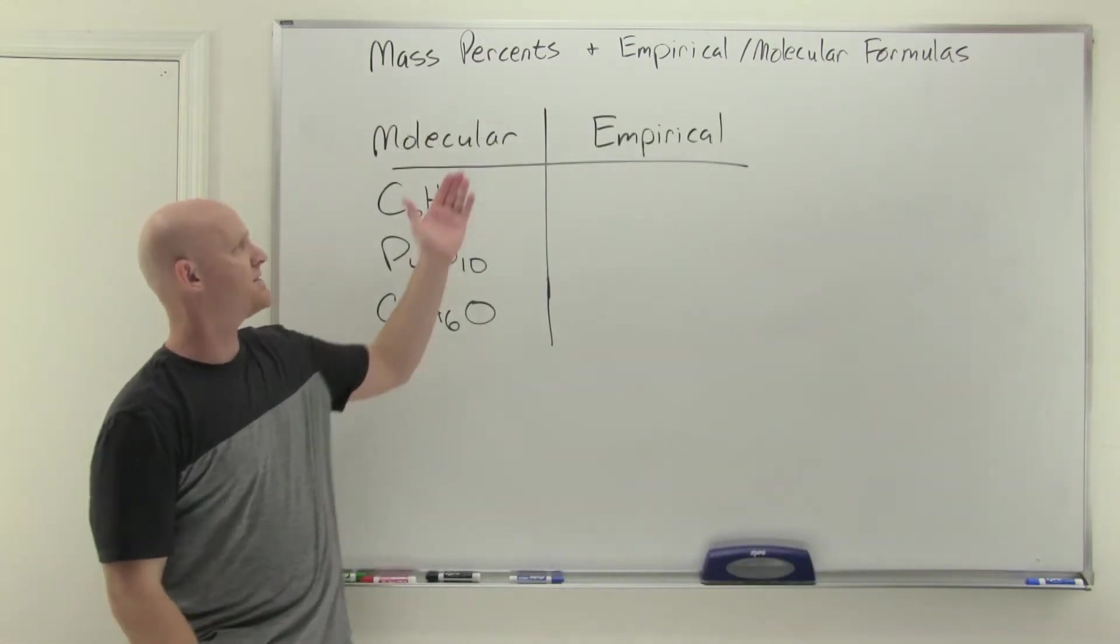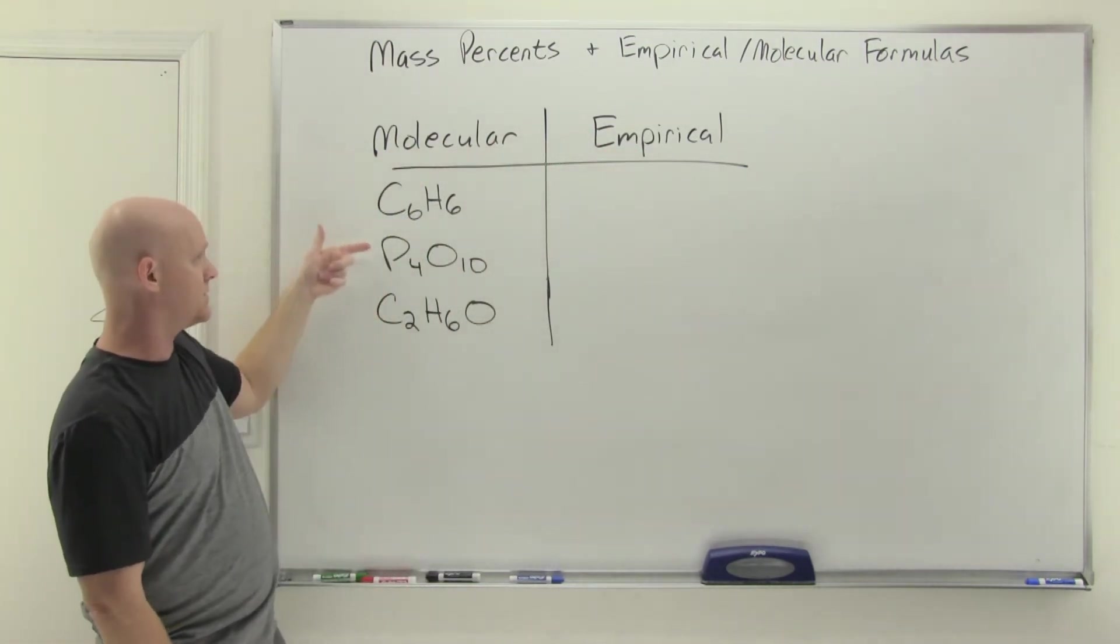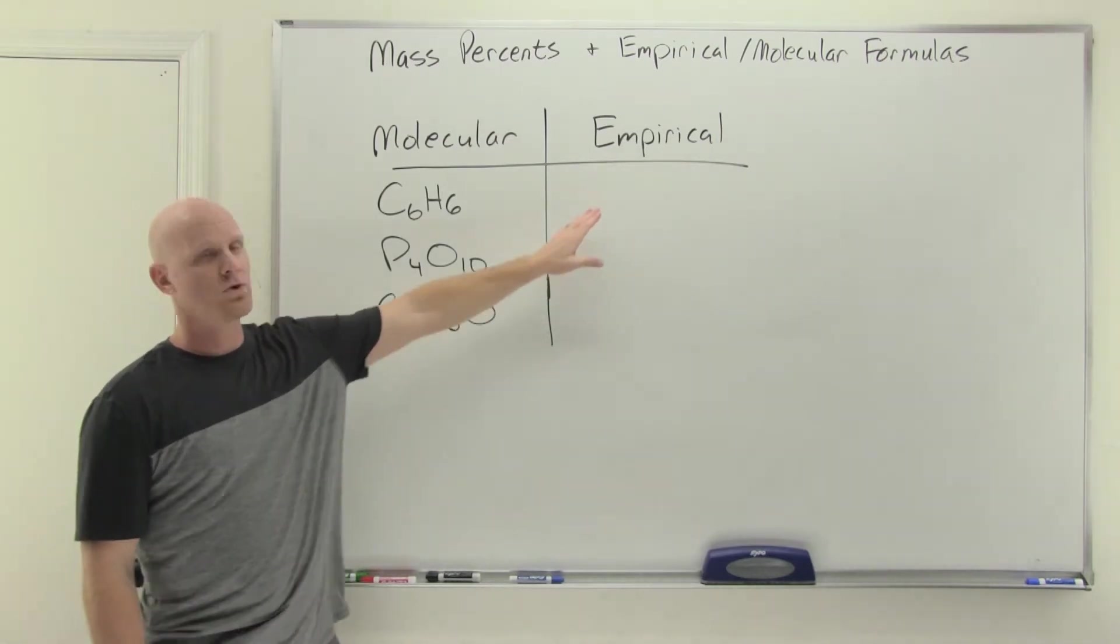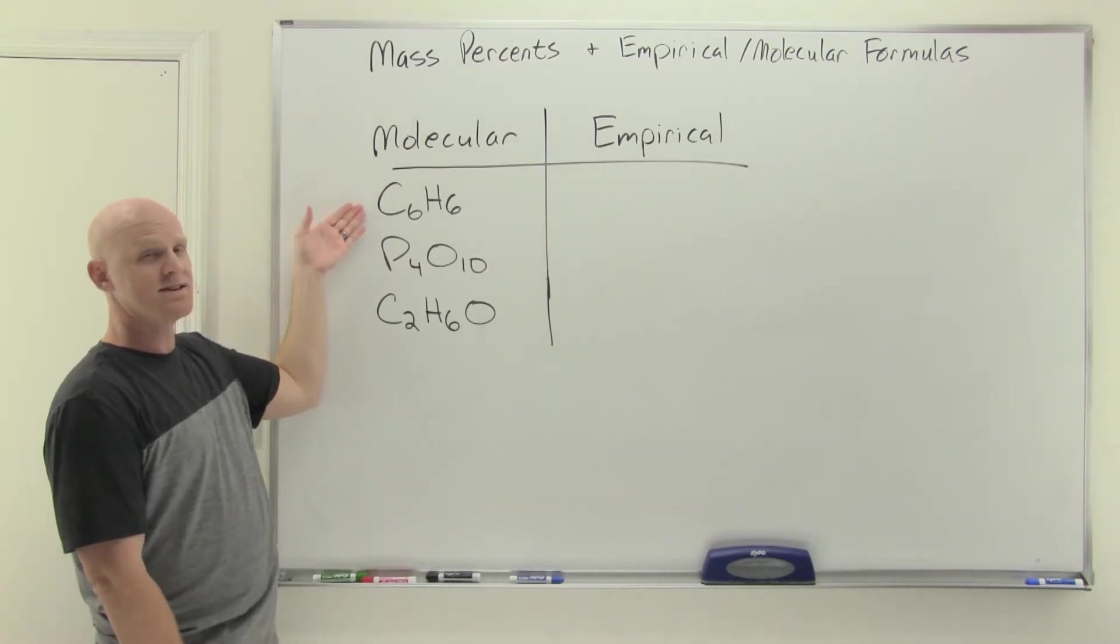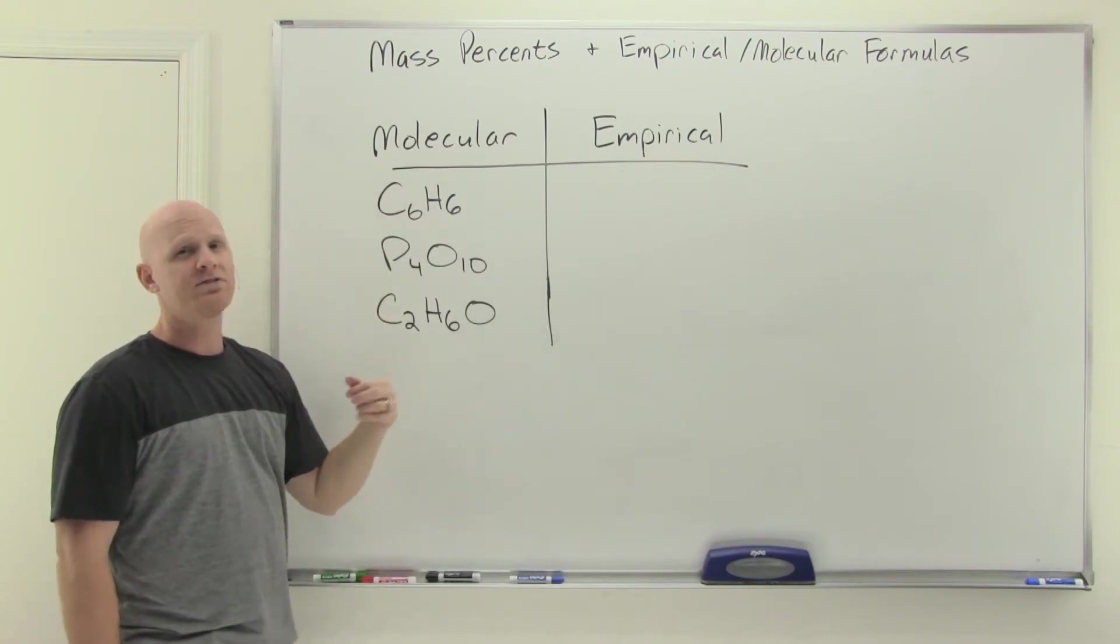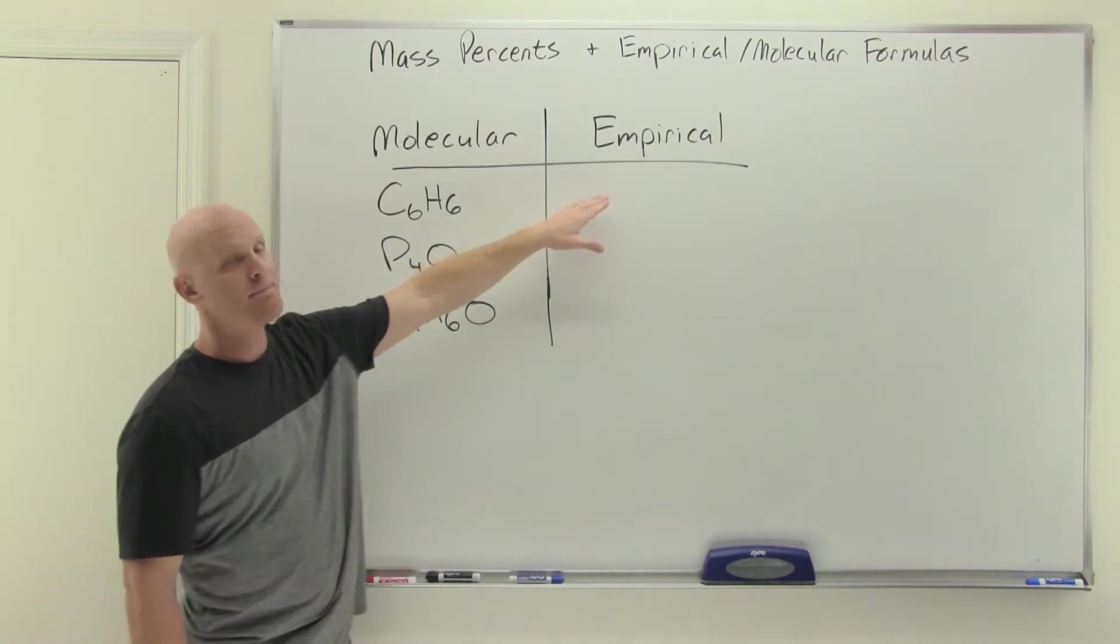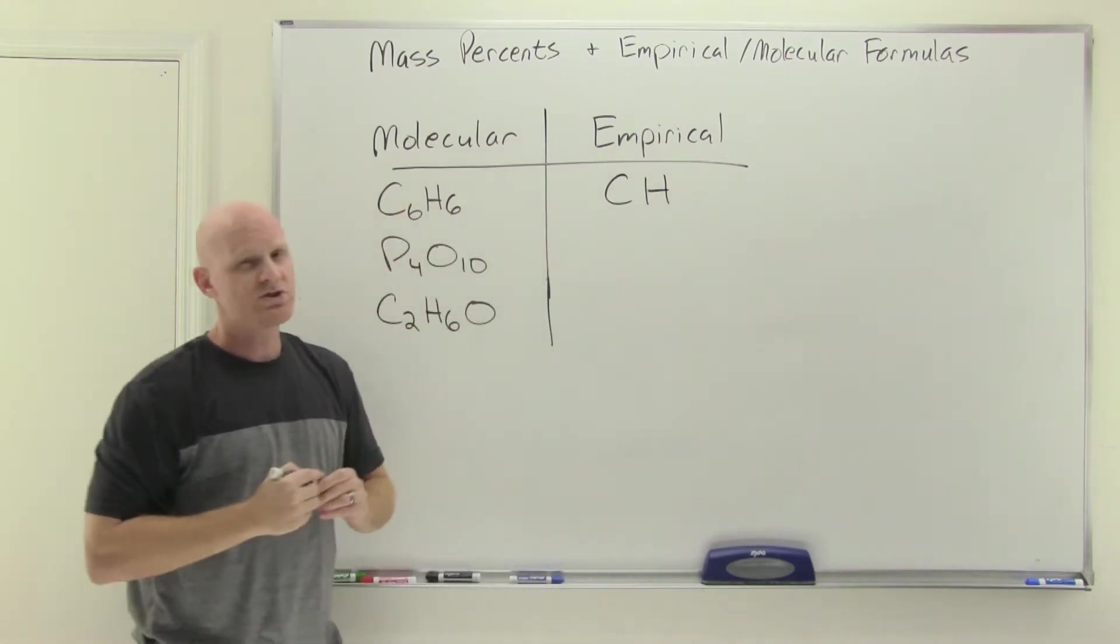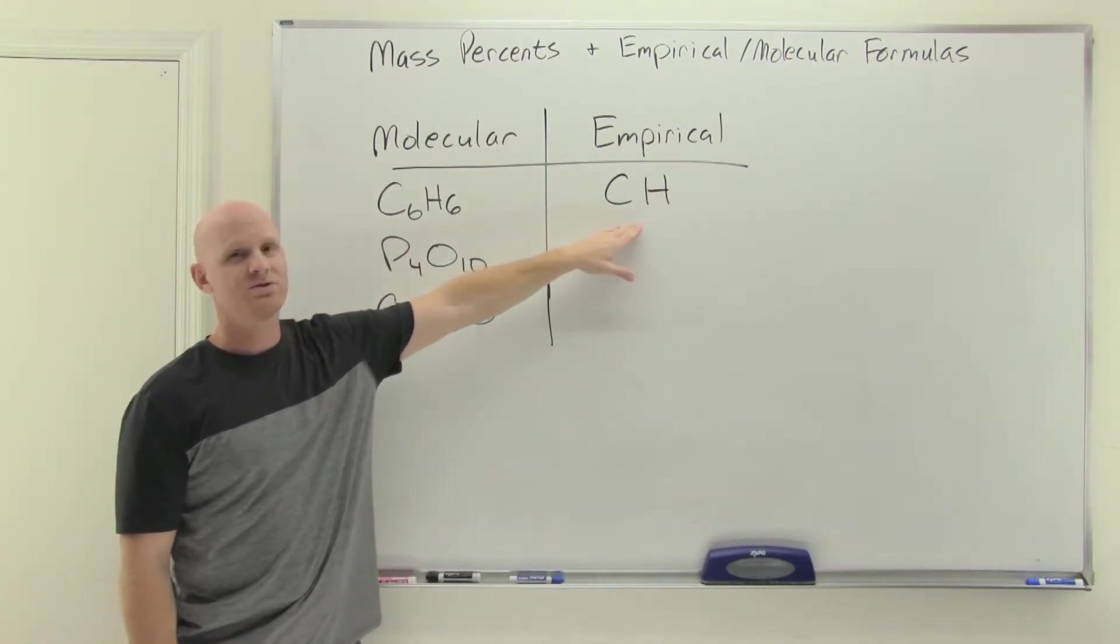Now I want to introduce what's called the empirical formula. Molecular formula is just the exact formula - it gives all the number of atoms of every single type in a molecule. Whereas an empirical formula is the most reduced whole number ratio of those same atoms. Benzene has a formula C6H6. In every single molecule of benzene, there are six carbon atoms and six hydrogen atoms. But the corresponding empirical formula would just be simply CH. The most reduced whole number ratio is one to one. That six to six ratio can get reduced down to one to one.